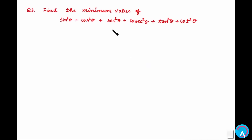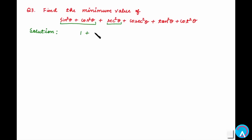Question 3 appears complicated but is straightforward. Find the minimum value of sin²θ + cosec²θ + tan²θ + cot²θ. We combine sin²θ + cos²θ = 1, then write cosec²θ = 1 + cot²θ and sec²θ = 1 + tan²θ, grouping the expression step by step.